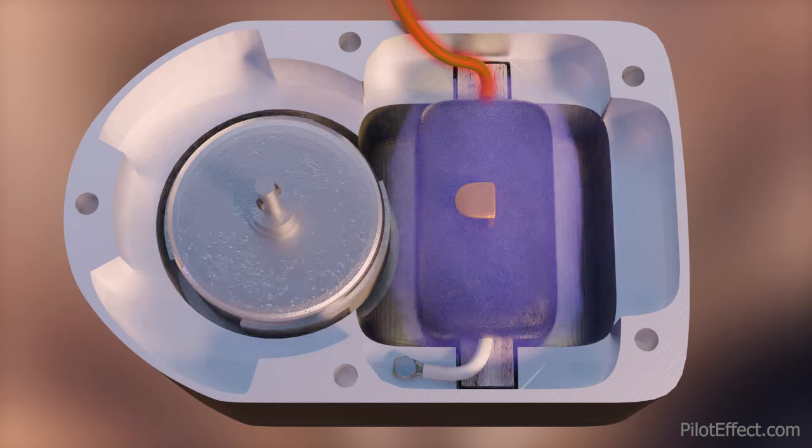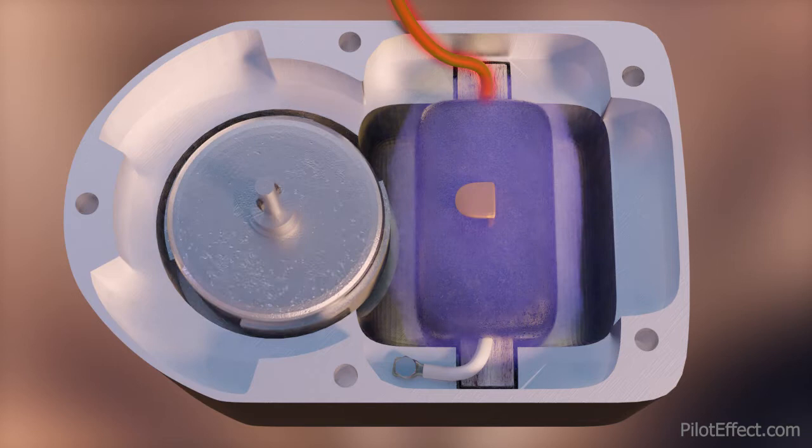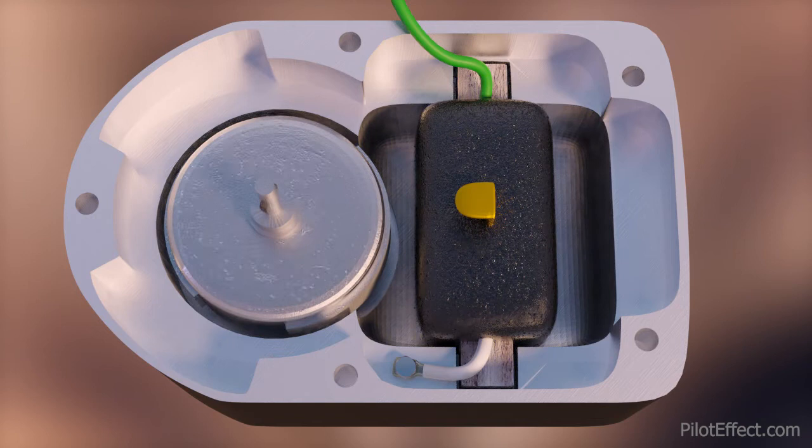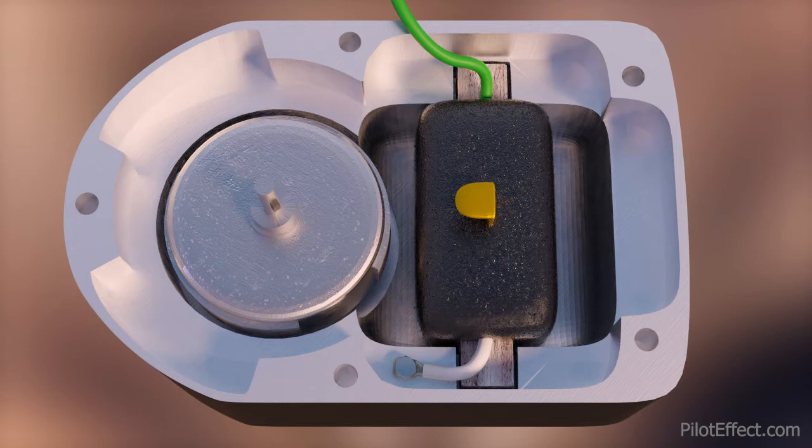So when ignition is required the grounding of the hot wire leaving the primary coil is disconnected. The flow of current is stopped and this causes the magnetic field to collapse suddenly cutting across the secondary coil. This induces a huge voltage spike in the secondary coil around 20,000 to 30,000 volts.